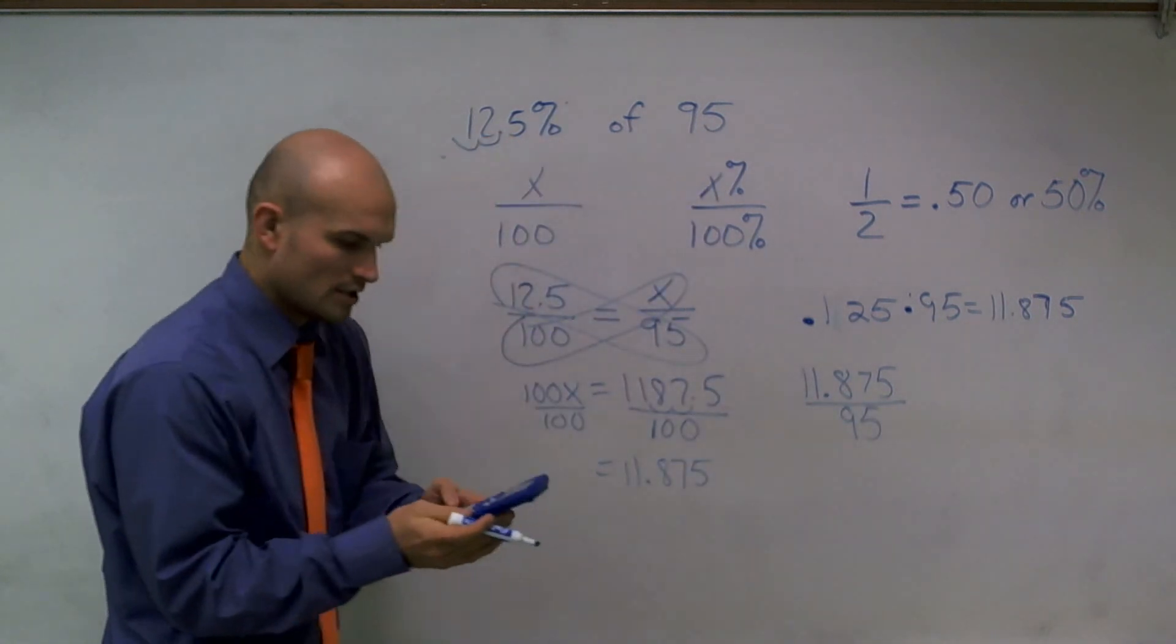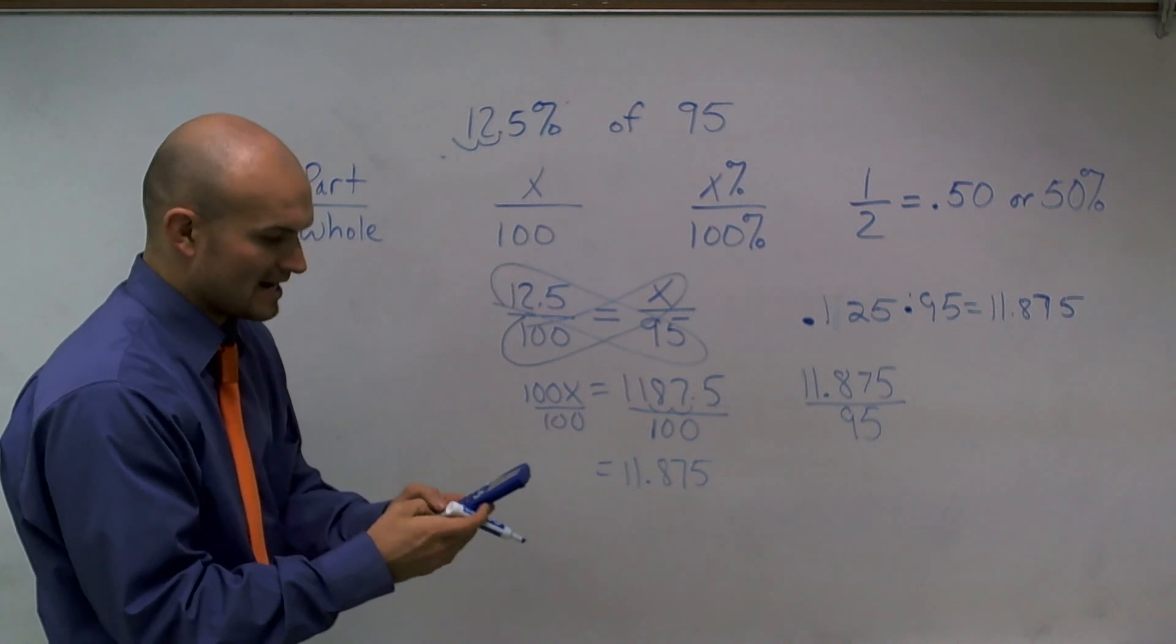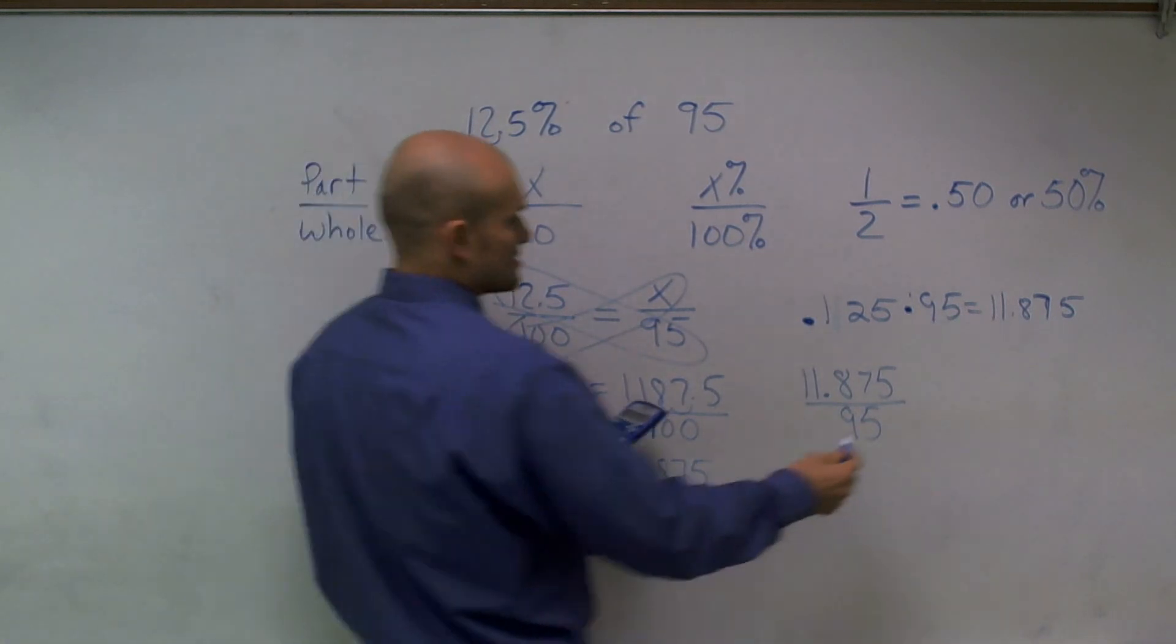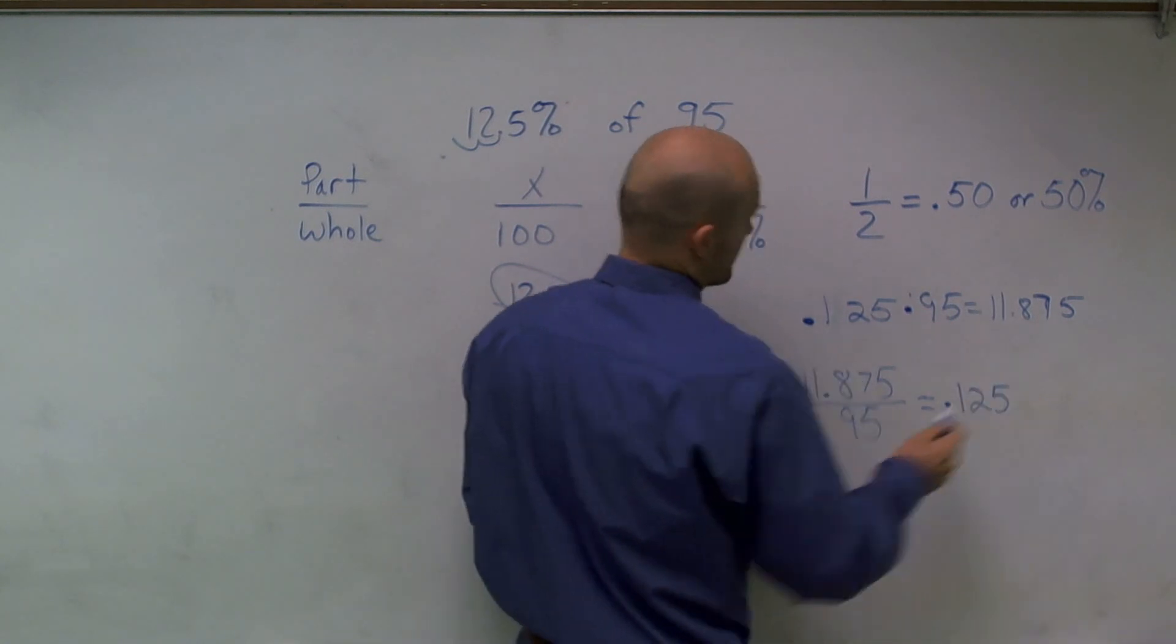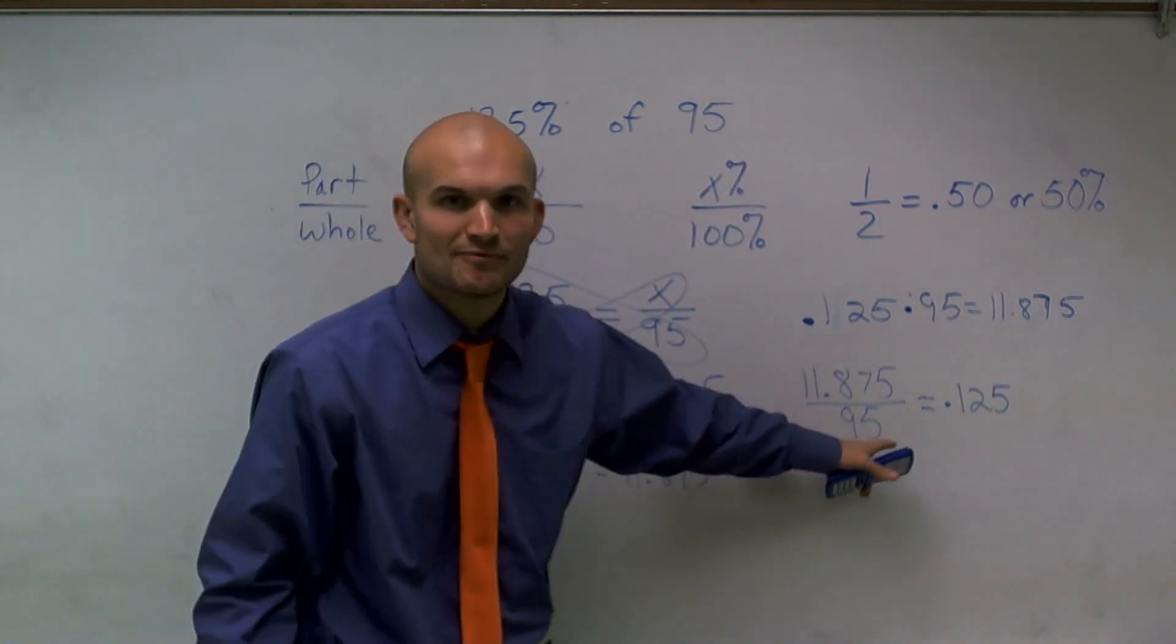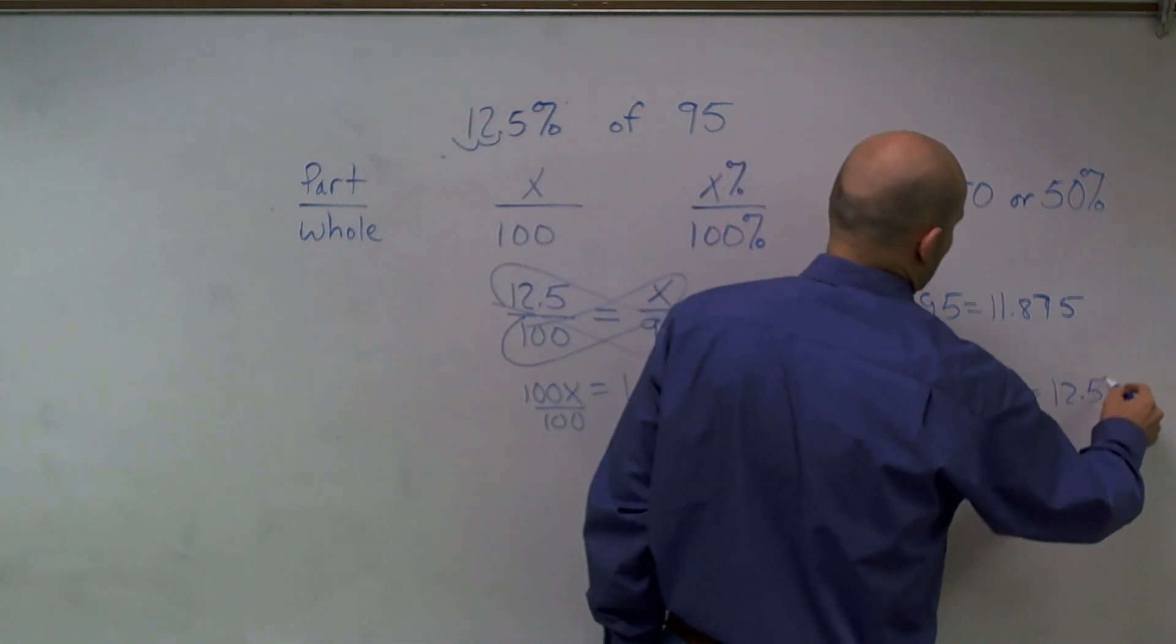So I do 11.875 divided by 95, and what I get is 0.125. Well, that's my decimal form. To put it as a percent would be 12.5%.